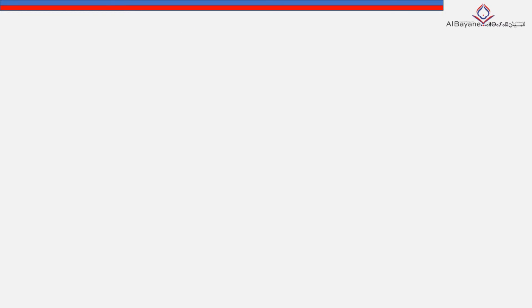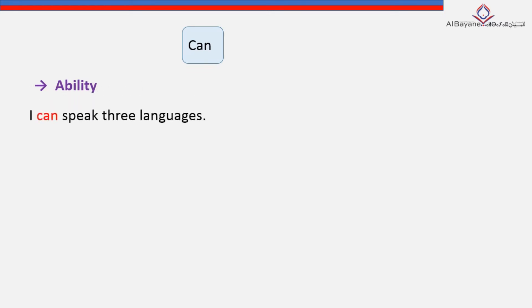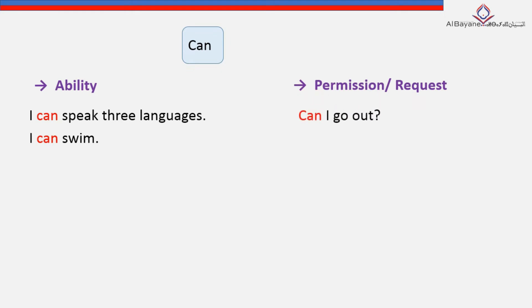We start with the modal verb 'can.' Can expresses two functions. The first one is ability. For example: 'I can speak three languages,' or 'I can swim.' And the second function is that 'can' expresses permission or request. For example: 'Can I go out?' or 'Can he enter the lab?'